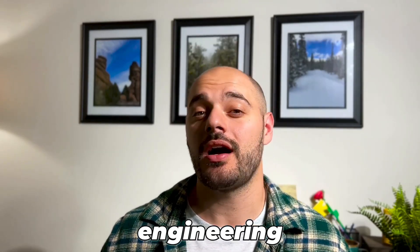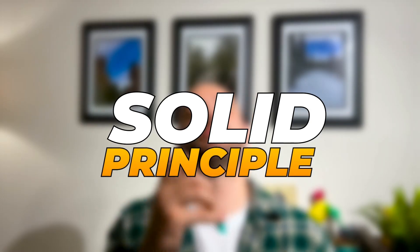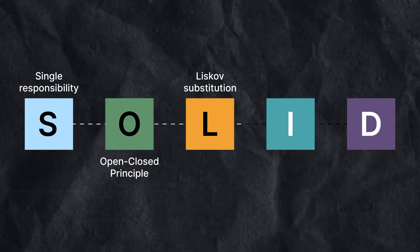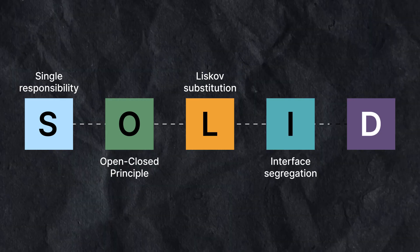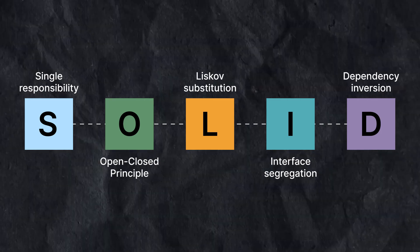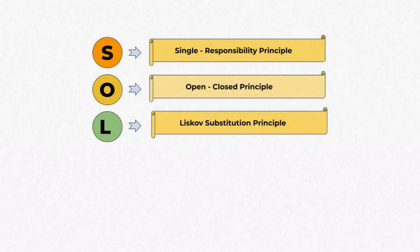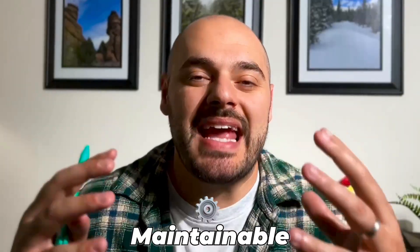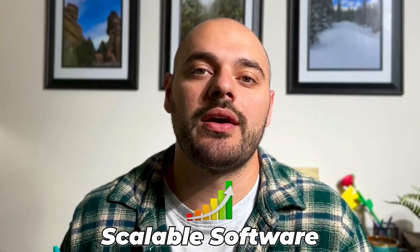Hey everybody, welcome back to another video. In this video we're going to go over a fundamental computer science and software engineering concept known as the SOLID principle, which stands for Single Responsibility, Open and Closed Principle, the Liskov Substitution Principle, the Interface Segregation Principle, and the Dependency Inversion Principle. SOLID has each one of these principles embedded in the root of computer science and software engineering. This principle was created by Uncle Bob, who is a leader in software engineering.